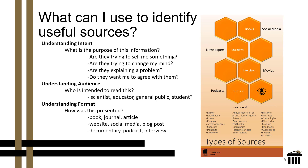When you understand what intent means, that can help you identify types of sources. What is the purpose of this information? Are they trying to sell you something? Are they trying to change your mind? Are they explaining a problem? If you're looking at news sources, what is the political bias of that news source? Are they trying to spin facts in order to create an emotional response? If you are looking at a medical solution, is the person selling that medical solution, or are they trying to prevent you from using a different solution? What you want to find are sources that are trying to educate you, to provide information, to give context without being overly biased.